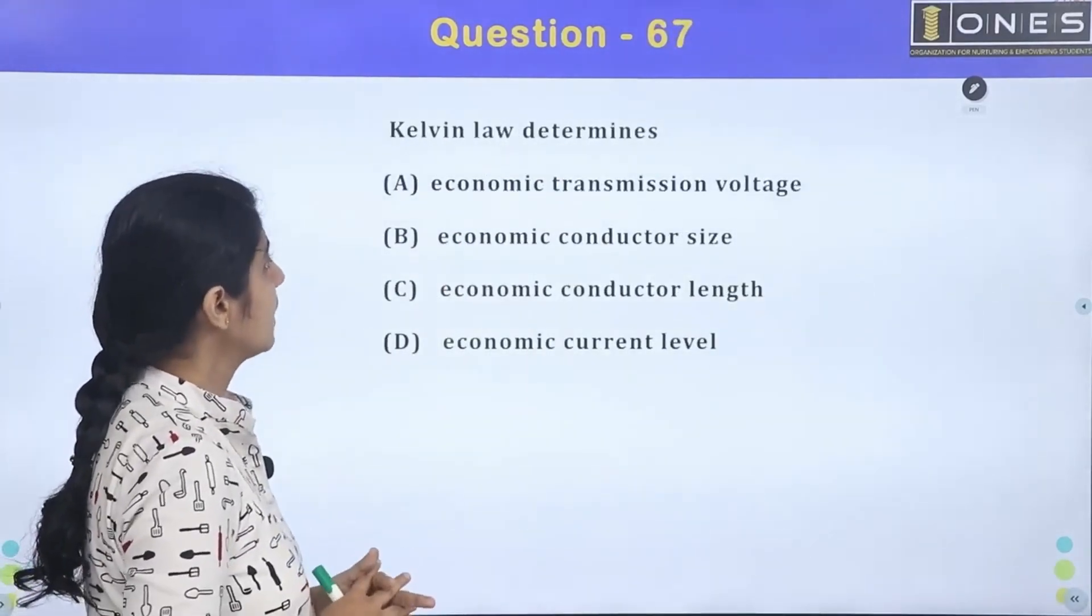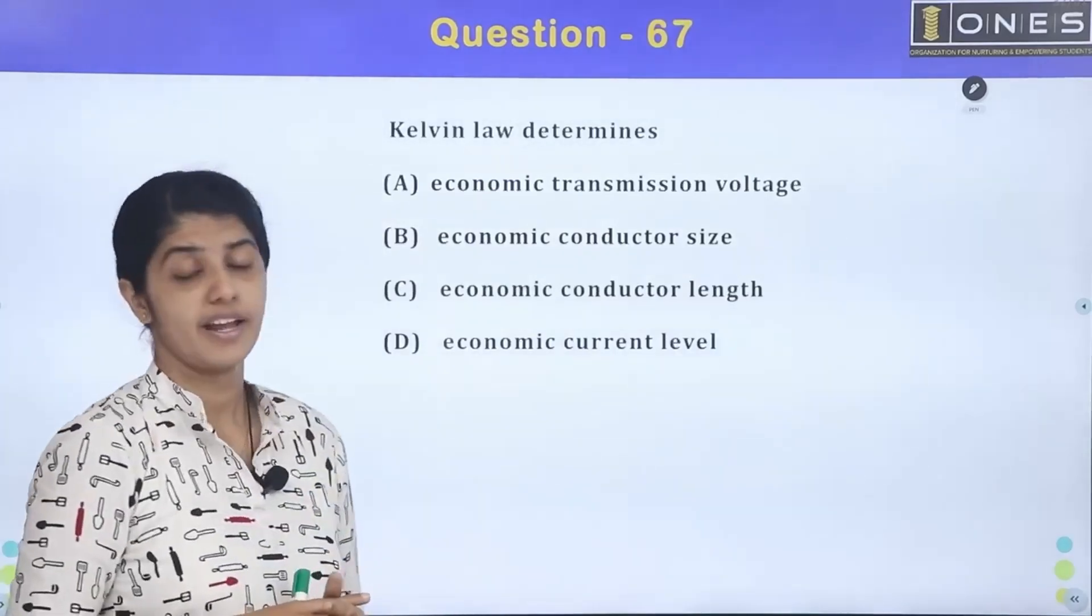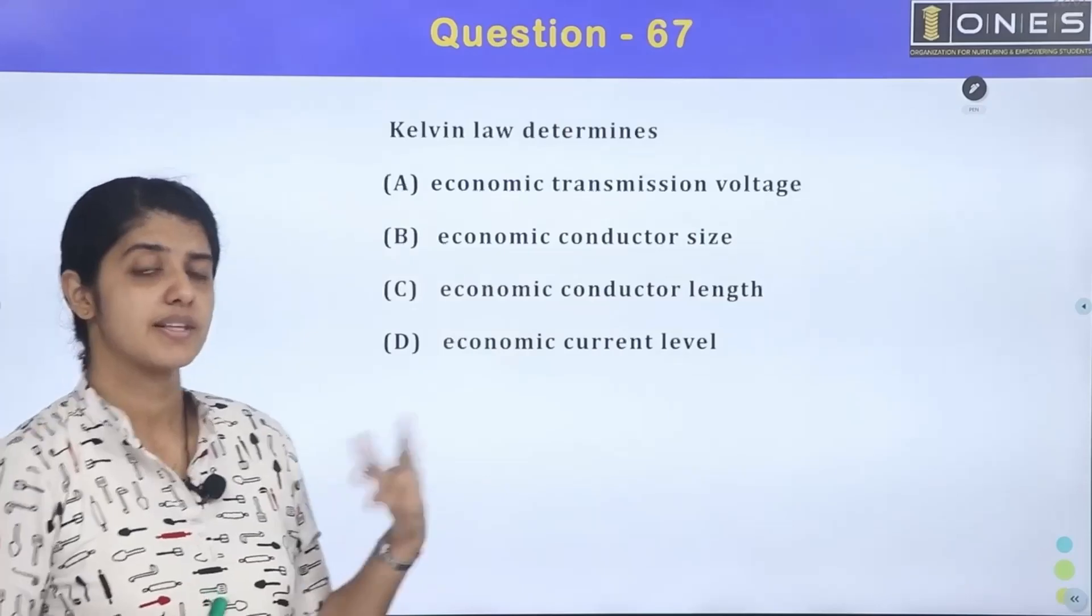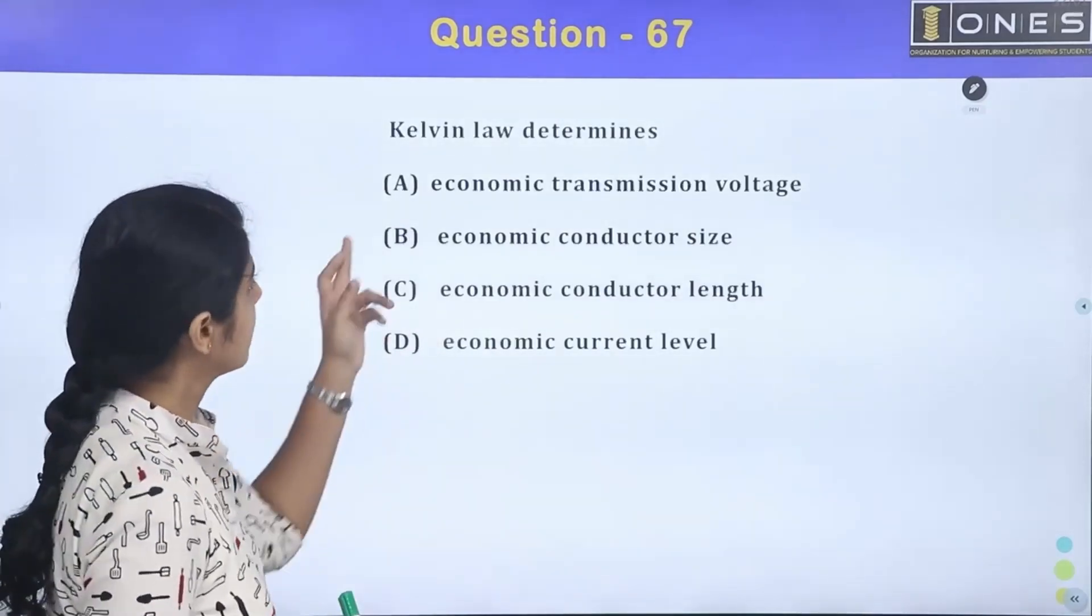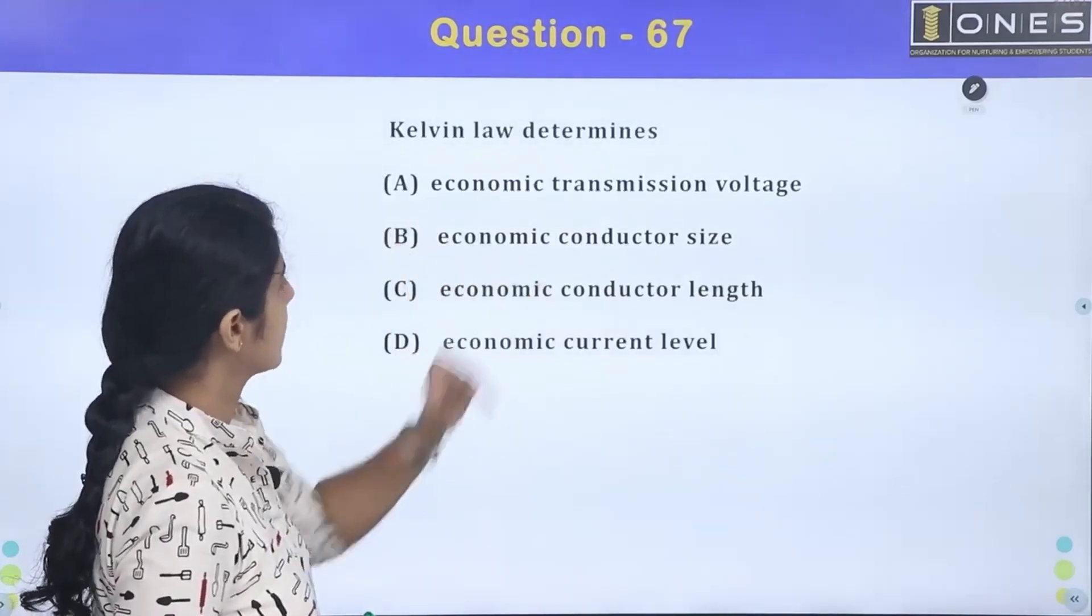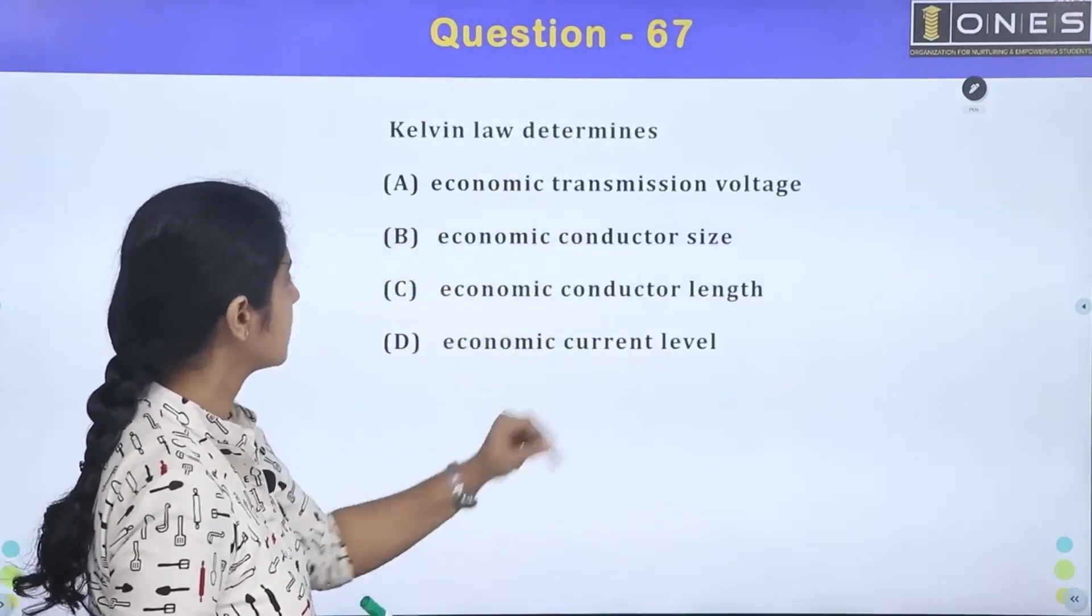Next question. Kelvin's law determines - Kelvin's law says the economic size of conductor. Conductor size means we can say: A) economic transmission voltage, B) economic conductor size, C) economic conductor length, D) economic current level.